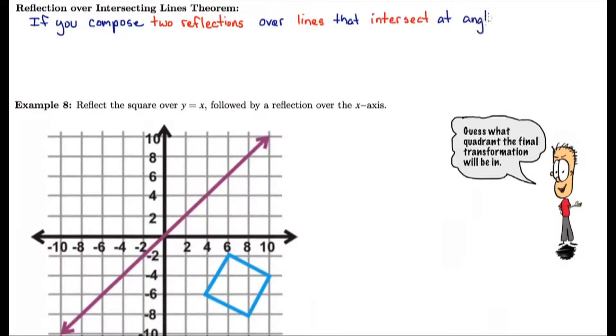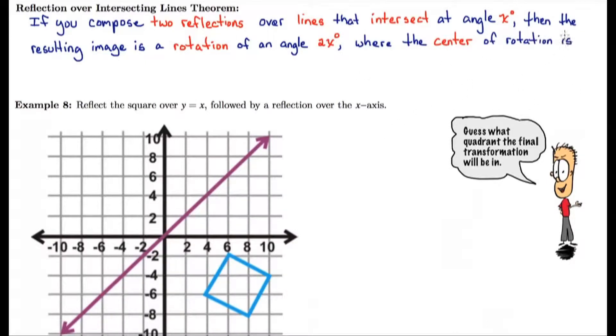So here's the theorem that goes with that. If you compose two reflections over lines that intersect at an angle of x degrees, then the resulting image is a rotation of an angle 2 times x degrees, where the center of rotation is the point of intersection.